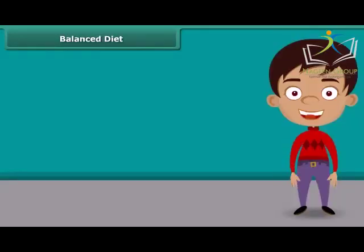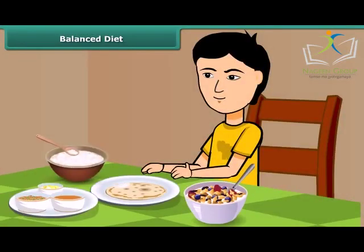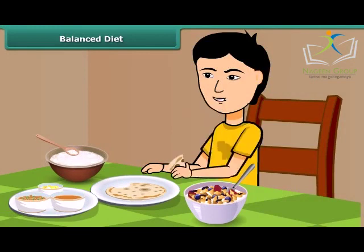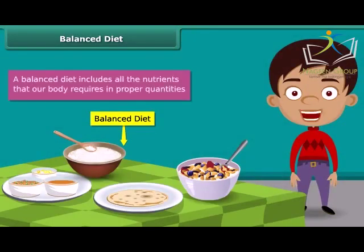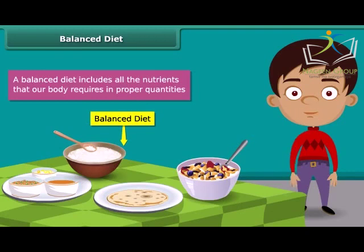All kinds of foods do not contain all the components. Our meals should have a balance of the different nutrients that our body needs for growing and maintaining good health. Such a diet is called a balanced diet. A balanced diet includes all the nutrients that our body requires in proper quantities. Having a balanced diet is the best way to live a healthy life.